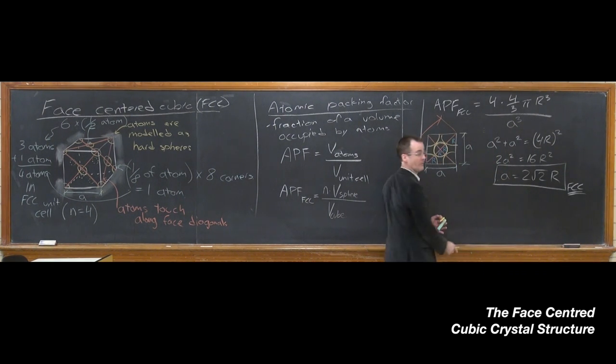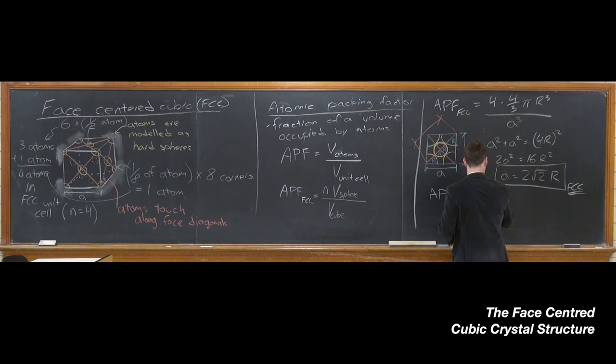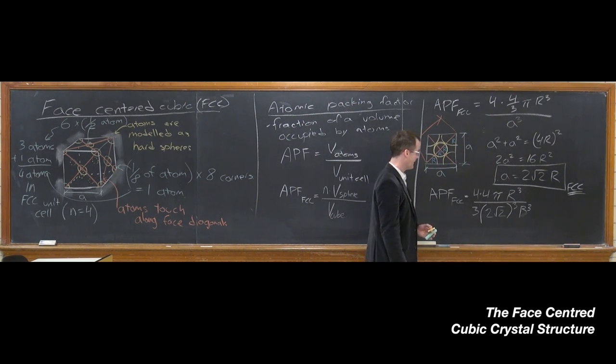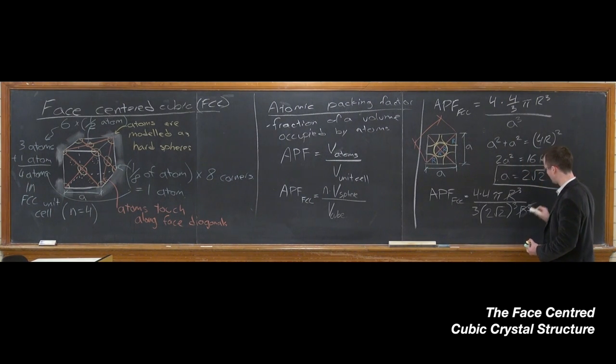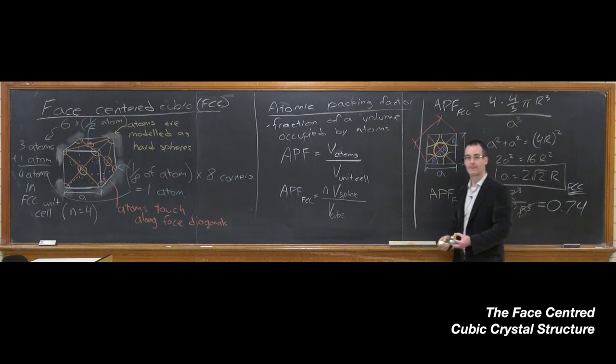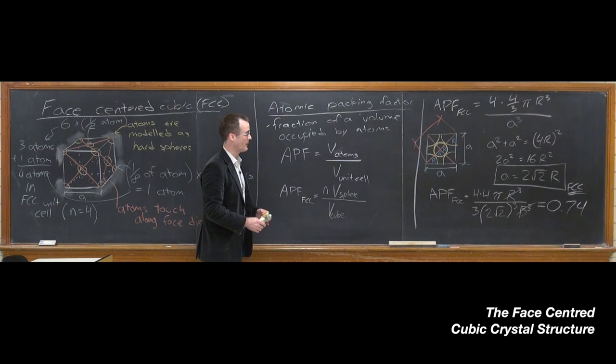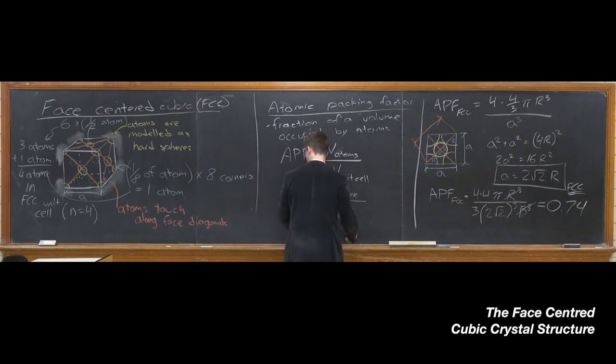So then if I take this result for A in terms of R and substitute back into our atomic packing fraction calculation, we'll be able to cancel out those irritating R's and A's. So if I didn't make any mistakes, this should be where we are now. And you can clearly see that we're going to be able to cancel out the R's. And if you do a little massaging on this number and work it out, and I'll leave you guys to do that on your own, you come up with the atomic packing factor, which is 0.74. So that tells us that 74% of a volume can be occupied by atoms. No more than that, in fact. An interesting result is that 0.74 is actually what we call closest packed.